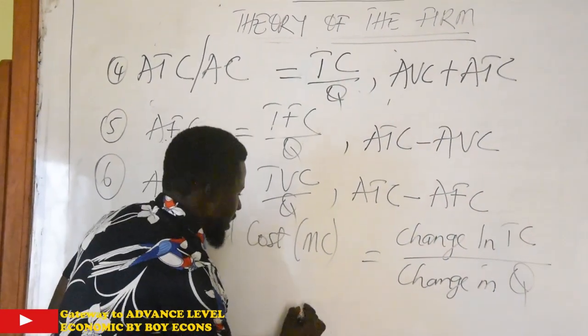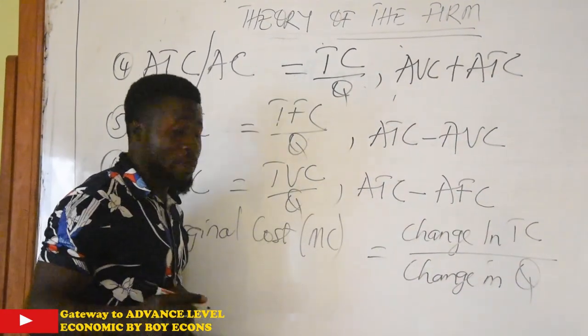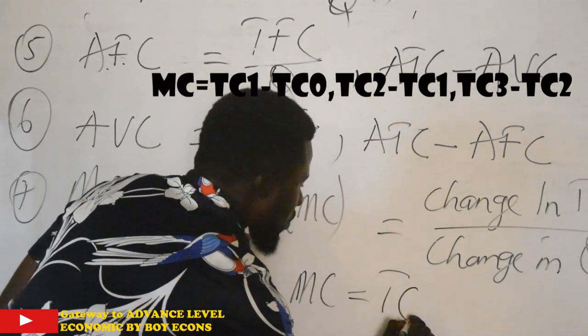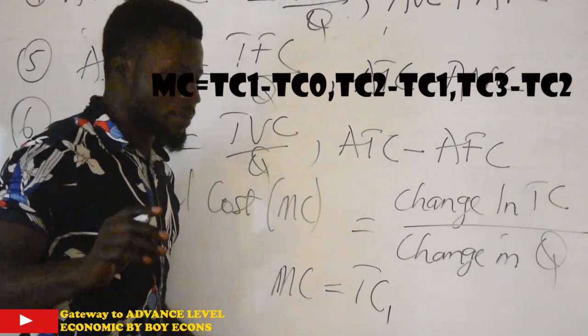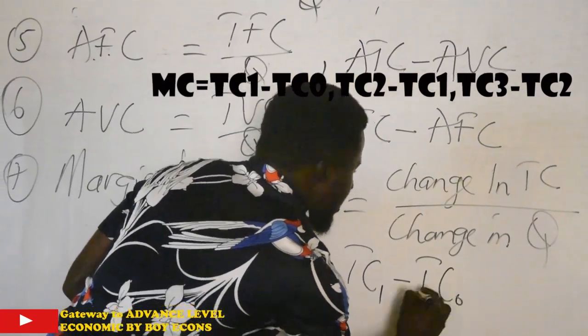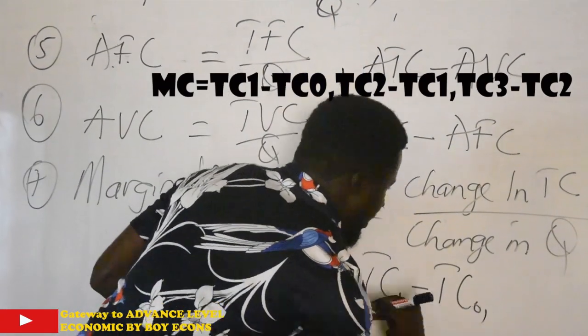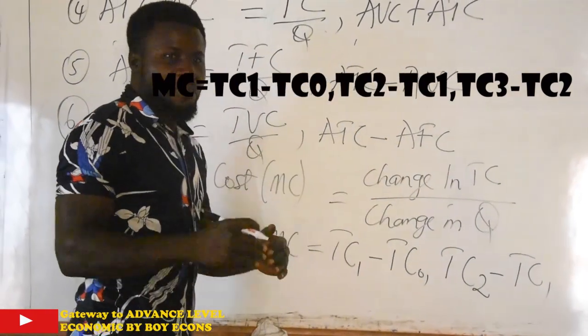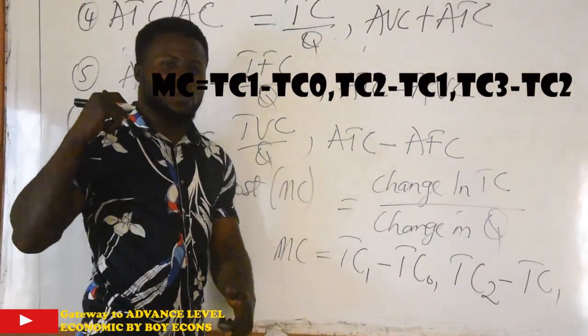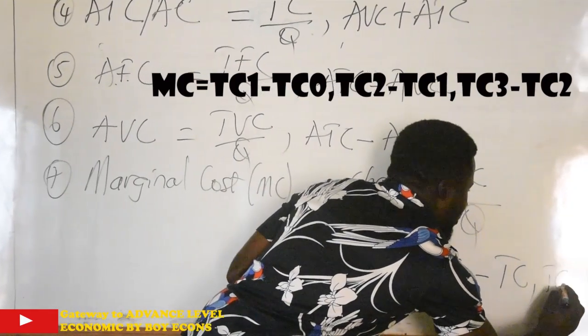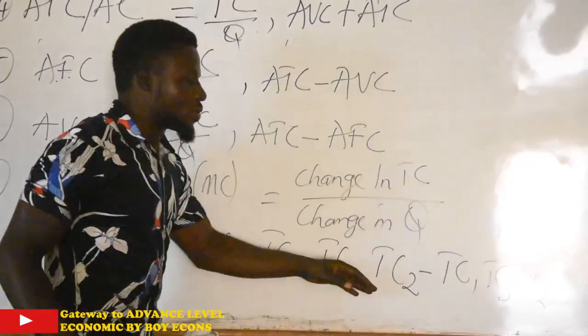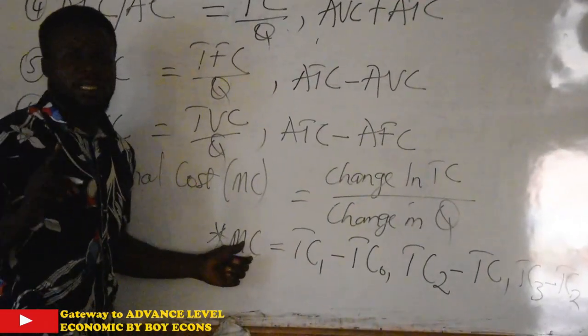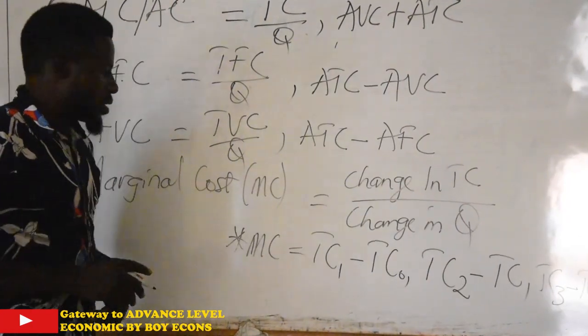Instead of going through this long process, you can calculate marginal cost by saying that marginal cost equals total cost one, that is the very first total cost on your table, minus total cost zero, the previous total cost. You put the answer. Total cost two minus total cost one, the present total cost minus the previous total cost. And then you continue. Total cost three minus total cost two. You continue like that. But mind you that you use this formula only if output persistently changes by one. Take note.